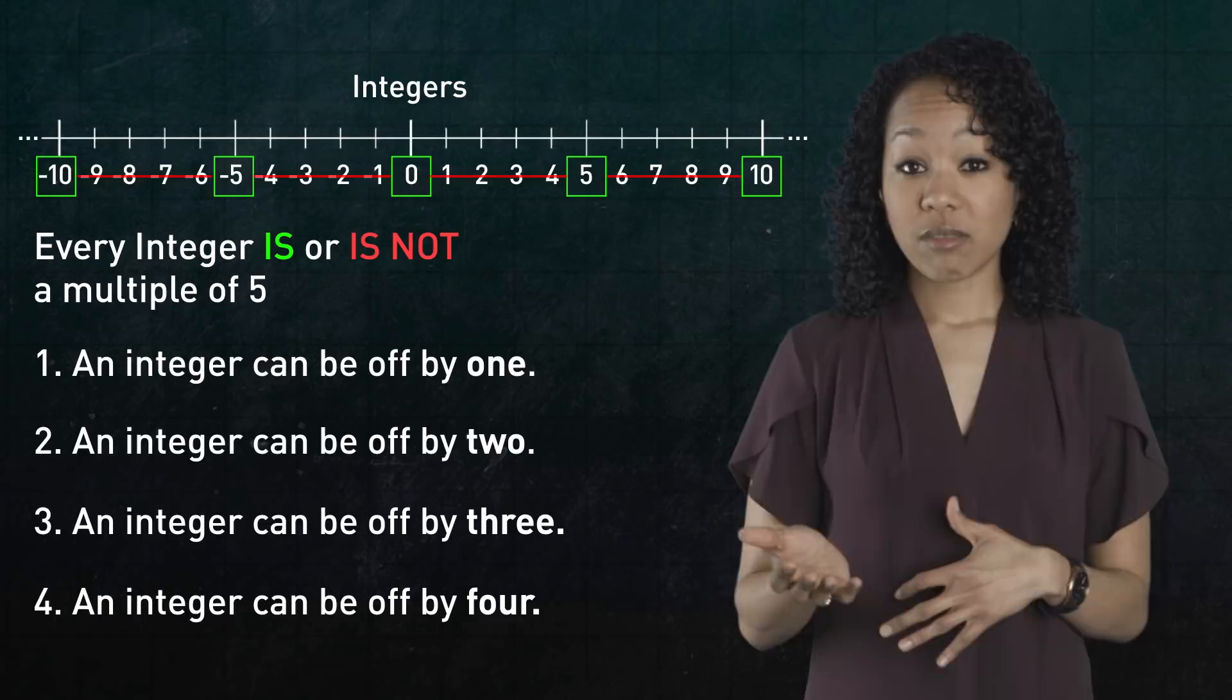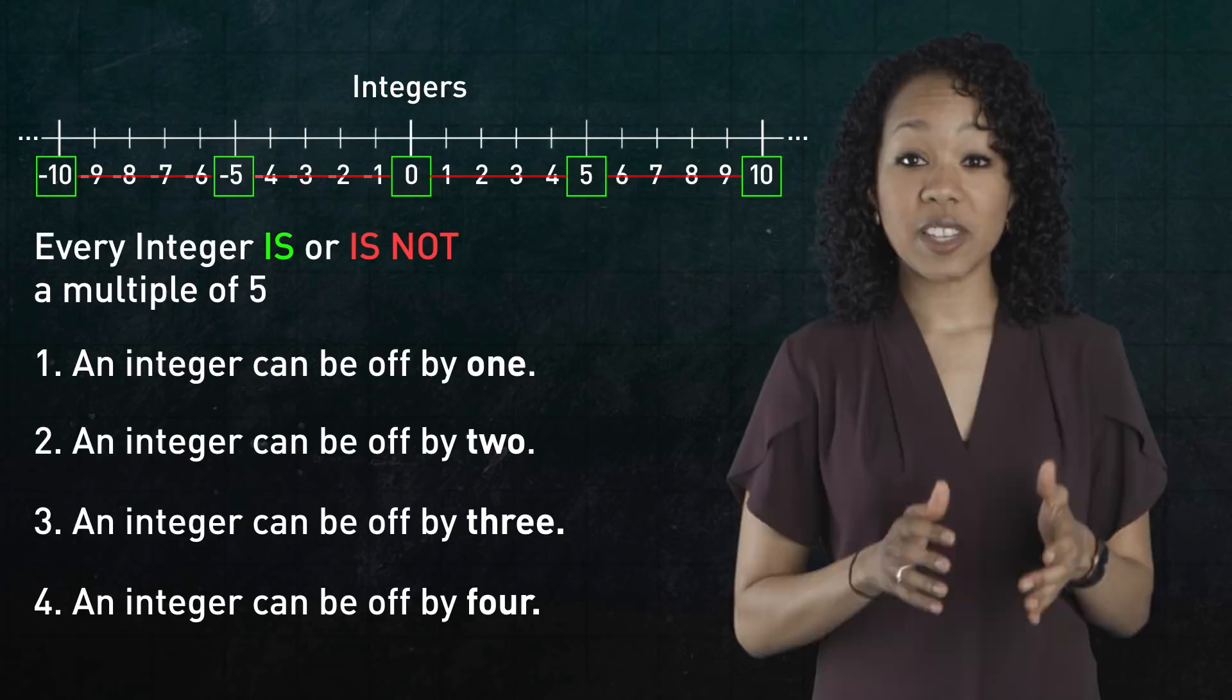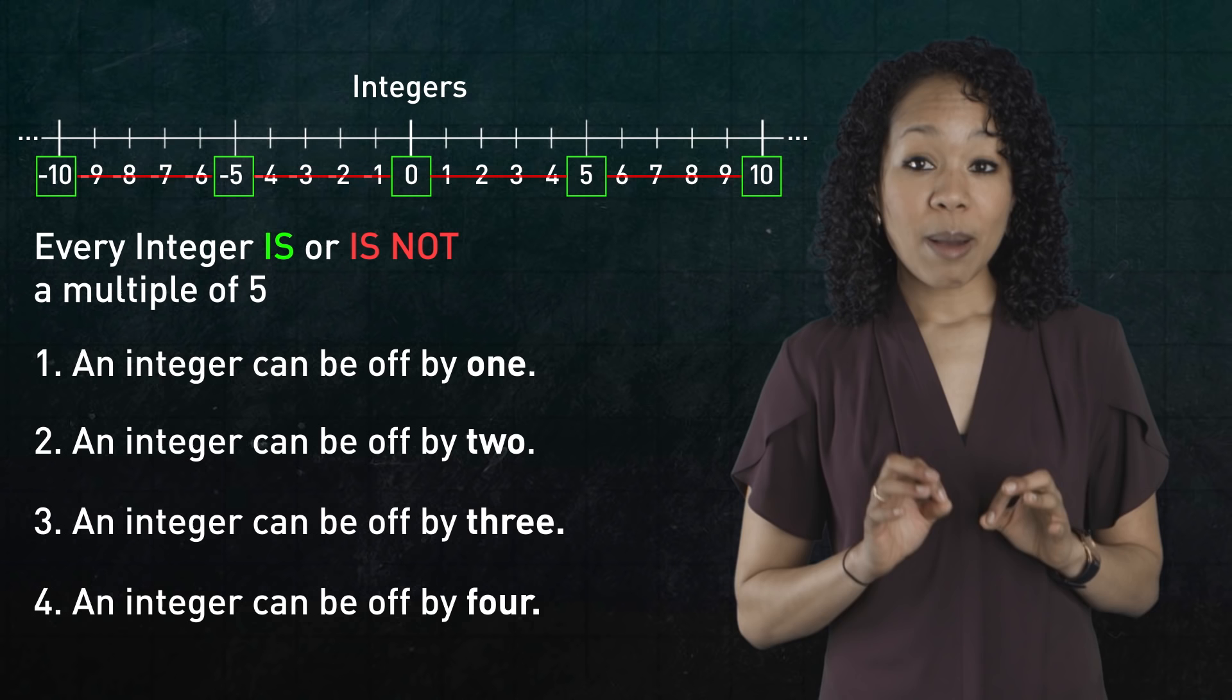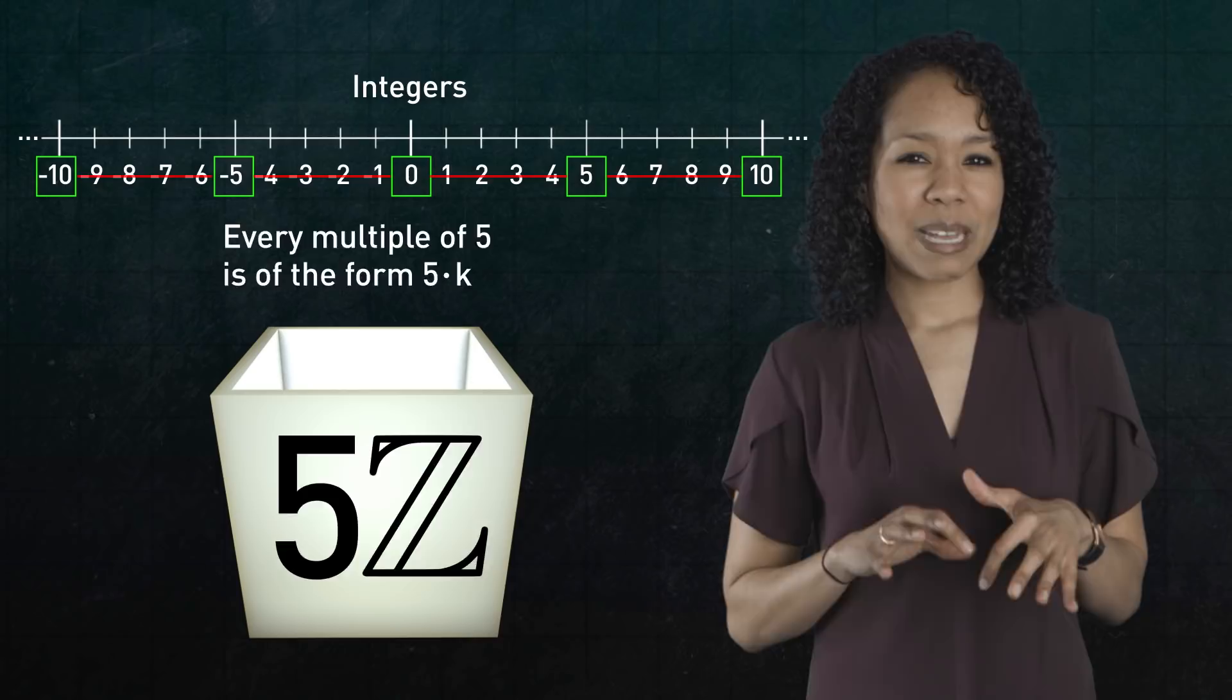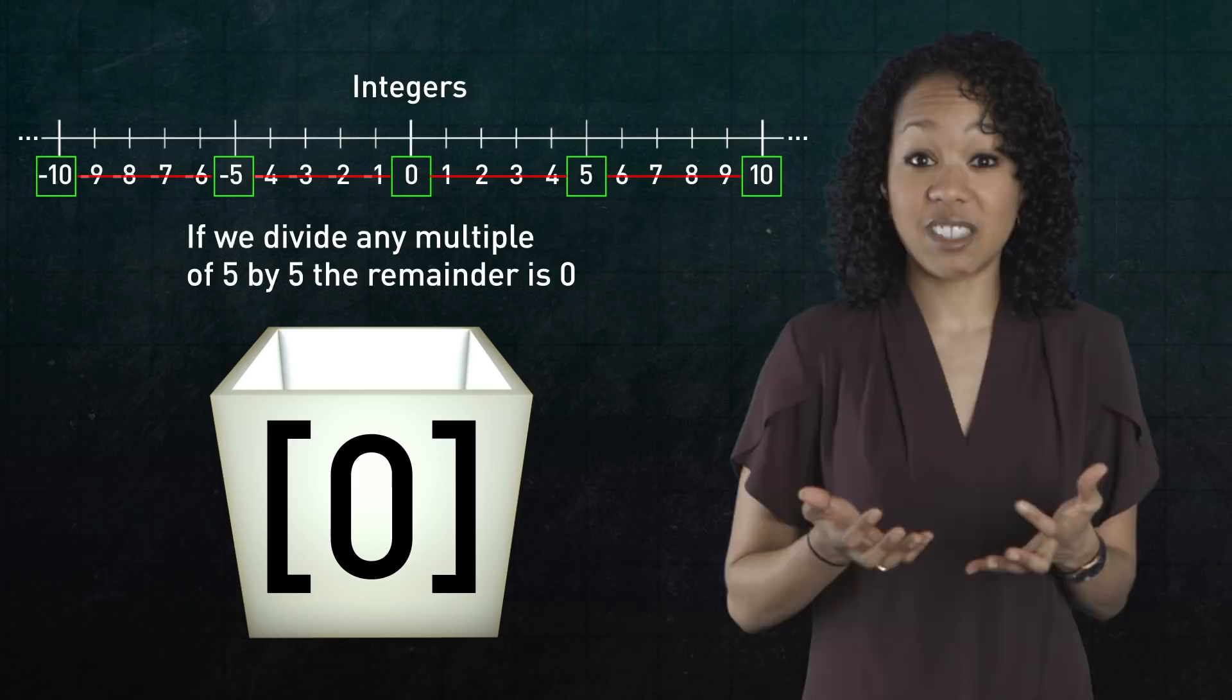So this lets us organize or partition the integers according to their divisibility or lack thereof by 5. Let's put those integers that are a multiple of 5 in a box, which we can cleverly label 5z, since every multiple of 5 is of the form 5 times k, where k is an integer. Or we can also label it 0 to remind us that if we divide any multiple of 5 by 5, the remainder is 0.